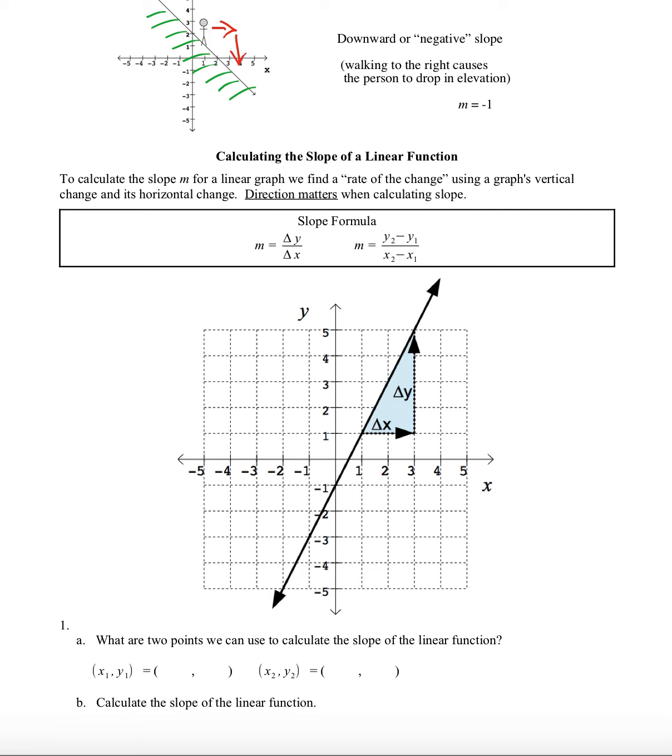And there's a formula for it. To calculate the slope m for a linear graph, we're going to want to find a rate of change using a graph's vertical change and its horizontal change. Direction matters when calculating slope. So sometimes the formula is written like this: m equals delta y over delta x.